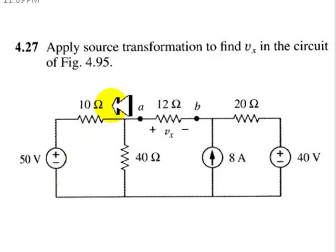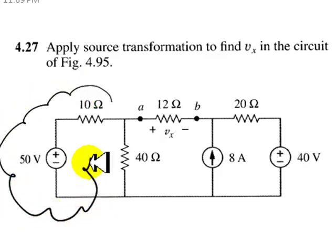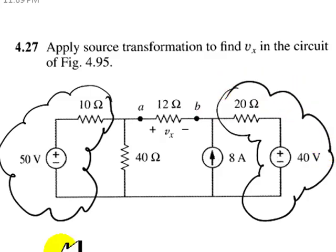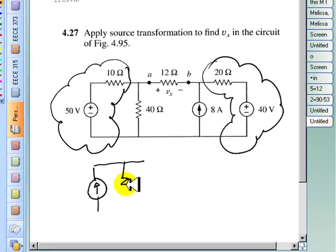We will convert this branch, which is a Thevenin branch, into a Norton branch. We will also convert this Thevenin branch into a Norton branch. Observe. This Thevenin branch becomes this Norton branch. The rest of the circuit remains the same. Excellent.